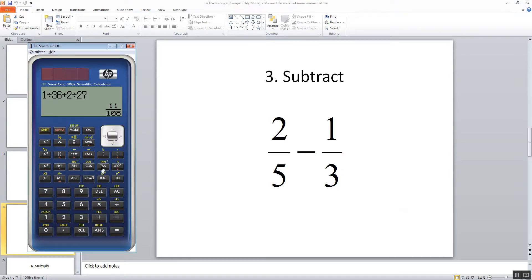Let's take a look at subtraction. So I got 2 divided by 5 minus 1 divided by 3. And then equals, and we get 1 15th as our answer.